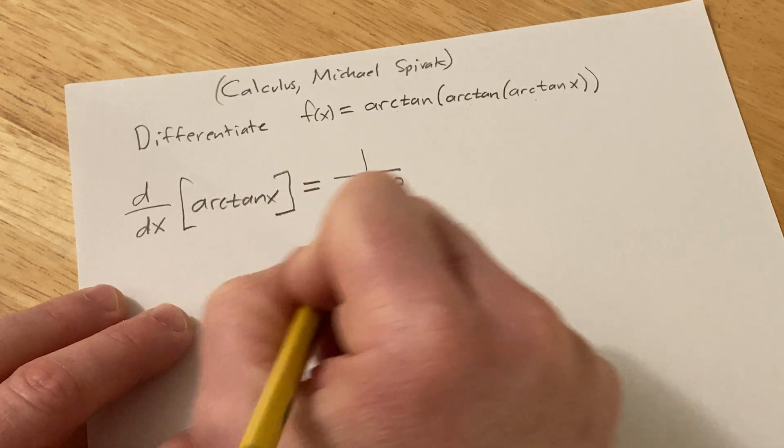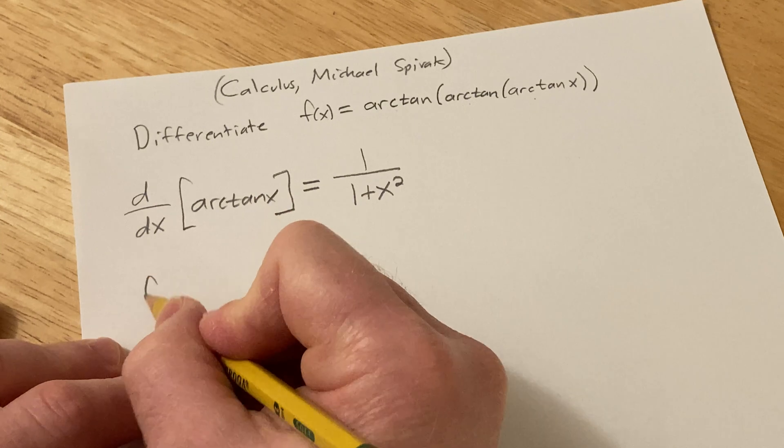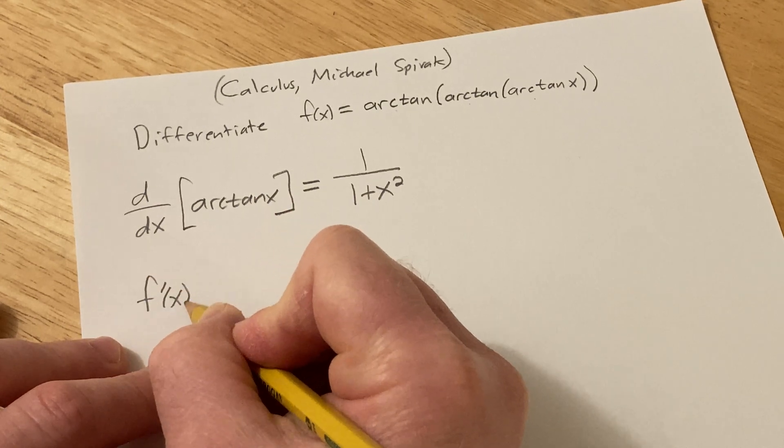So that's the formula if it's just arctangent of x, but here it's arctangent of all this stuff. So I'm going to go ahead and just do it: f prime of x is equal to...